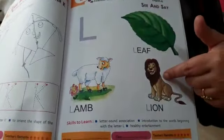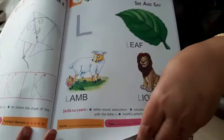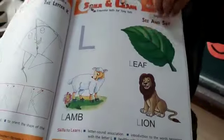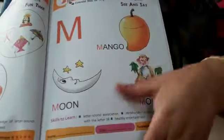L, leaf, lamb, lion. M, mango, moon, monkey.